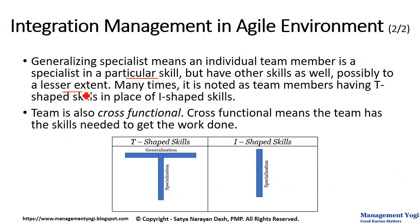For example, you have hired a tester. The main skill of a tester is testing. But the tester also has other skills — maybe a bit of coding or development. If needed, the tester can participate in documentation writing or create a build script for release, though skilled to a lesser extent in those areas. The specialist skill is testing, whereas the generalizing skills cover other areas such as coding, integration, release, and documentation writing.